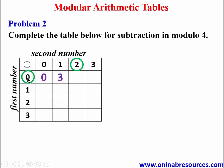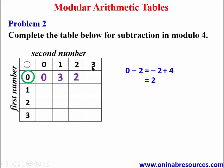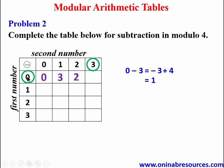Then 0 minus 2 gives negative 2. We add 4: negative 2 plus 4 gives 2, so 2 goes into that cell. Then 0 minus 3 is negative 3. We add 4: negative 3 plus 4 gives 1. Therefore 0 minus 3 gives 1 in modulo 4. That completes the row of 0.